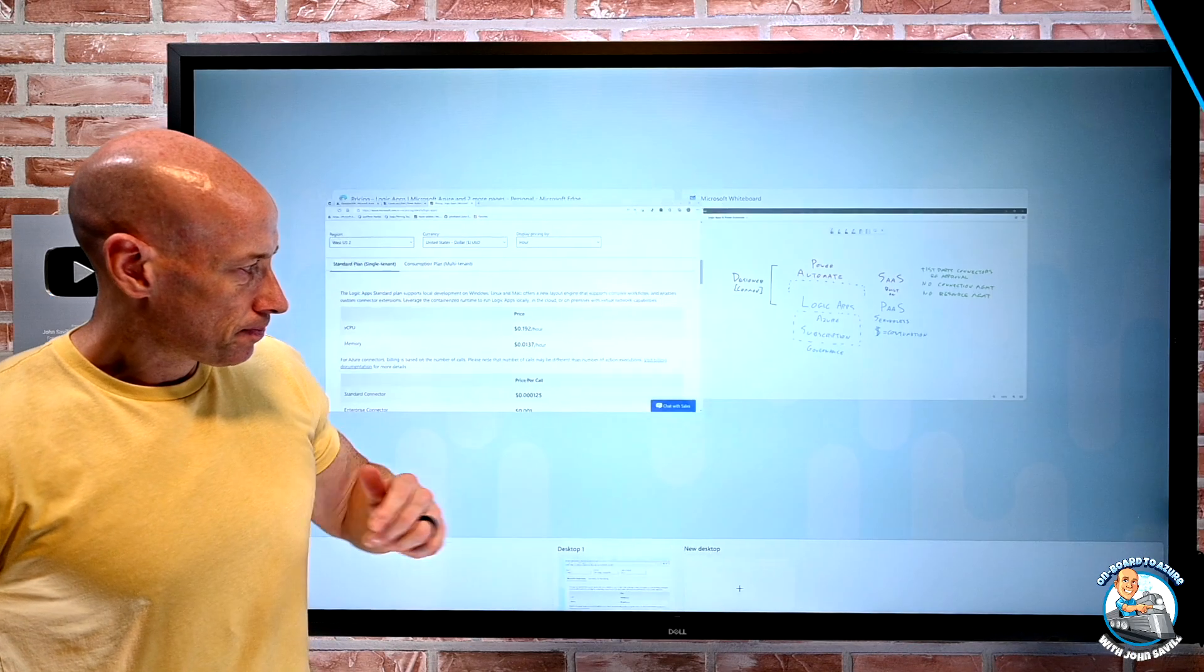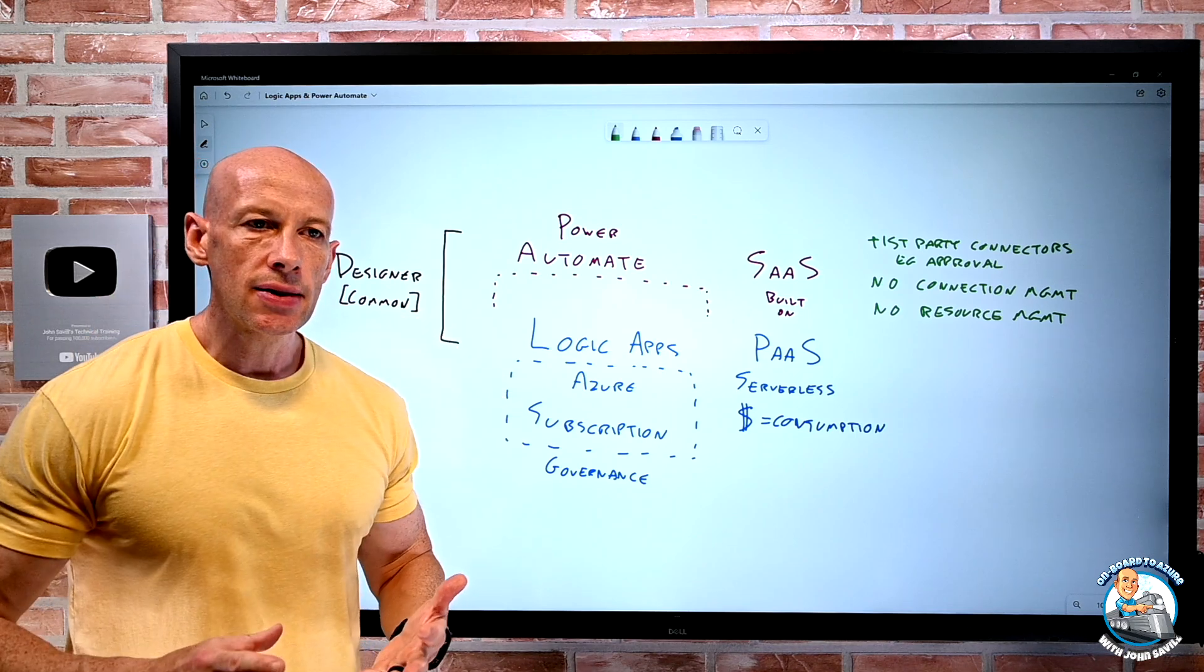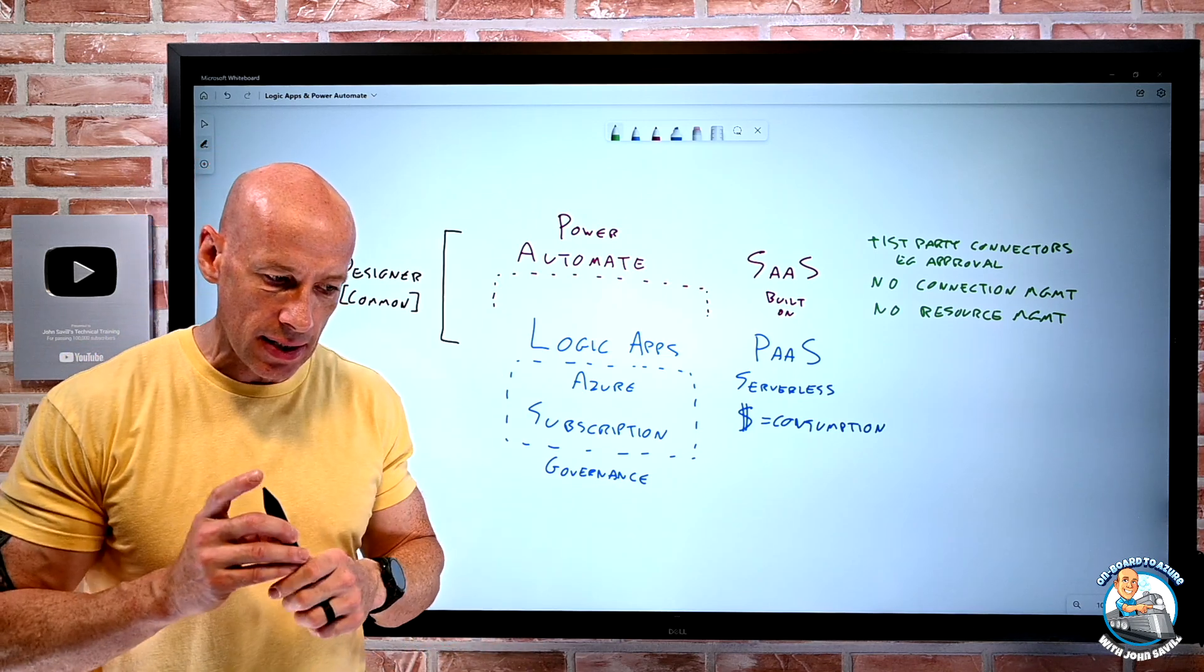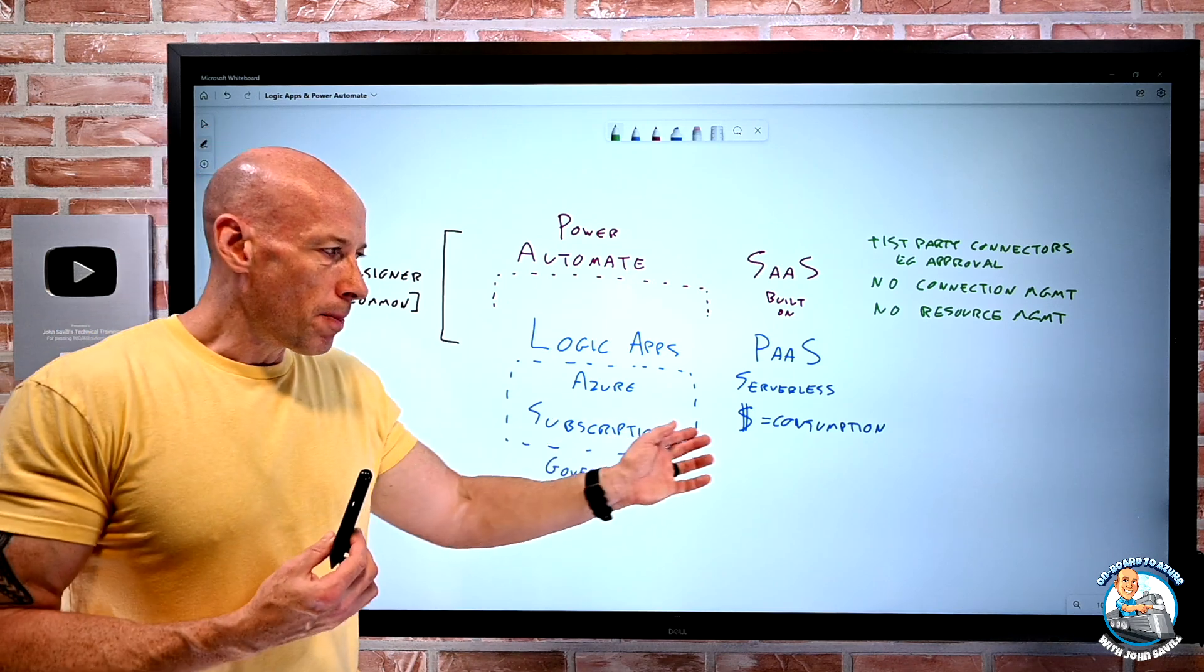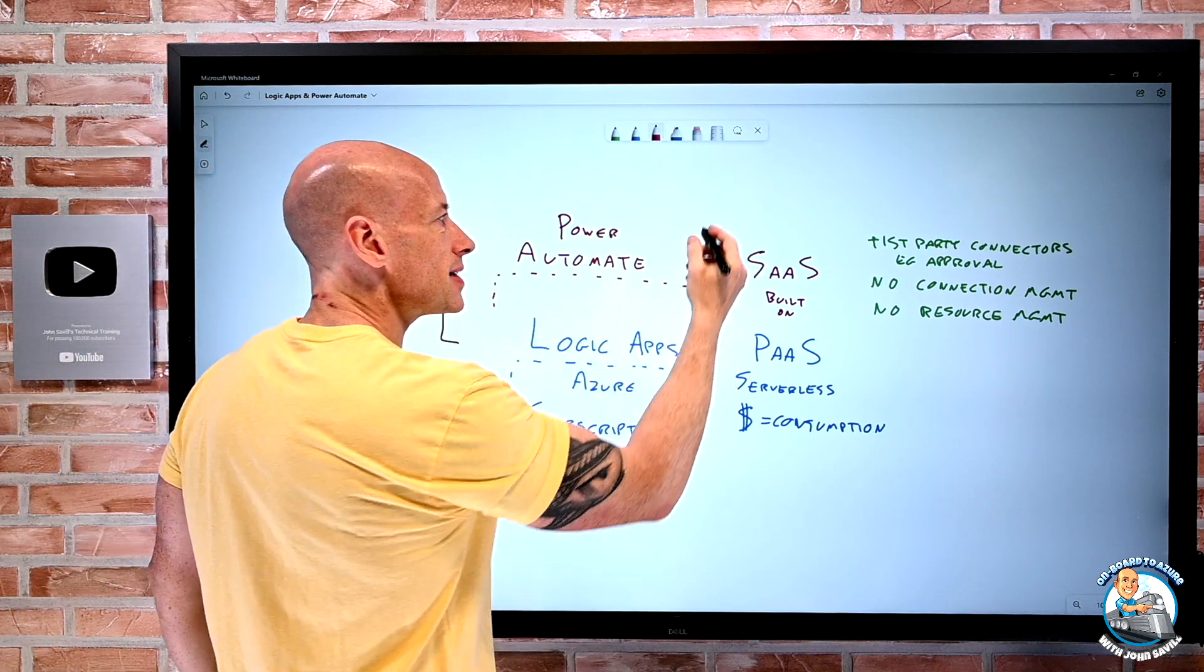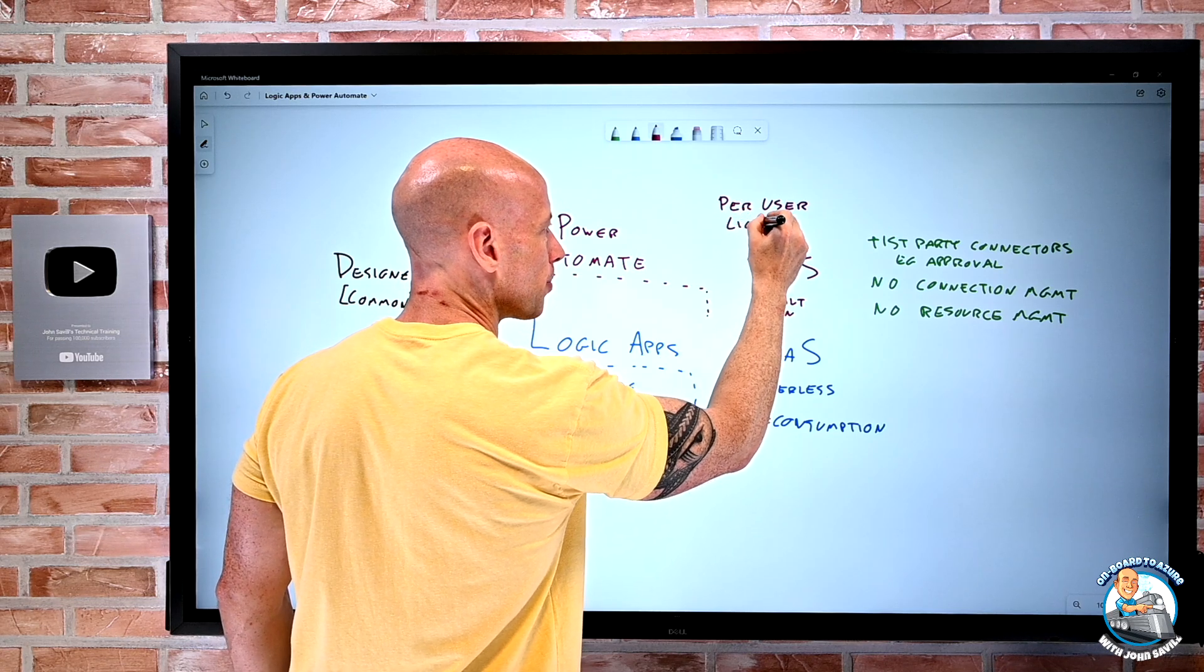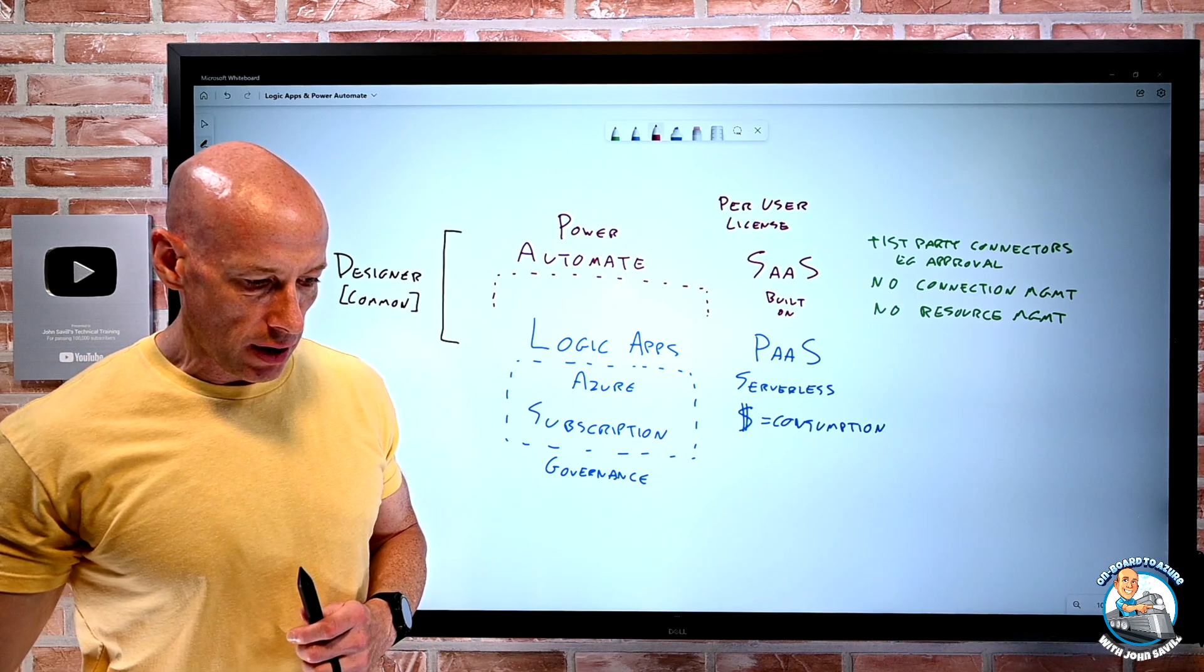So if we jump back, so we say, okay, great. So Power Automate abstracts a lot of the resource management away, the connection management away, adds some first party connectors like approvals to make that really, really simple to do. From a licensing perspective, it's not based on this consumption anymore. So the way this is going to work, now I'm going to say per user. There are other license options. For example, there's like a per flow, there are different things I can do. And if we actually look at those really, really quickly.